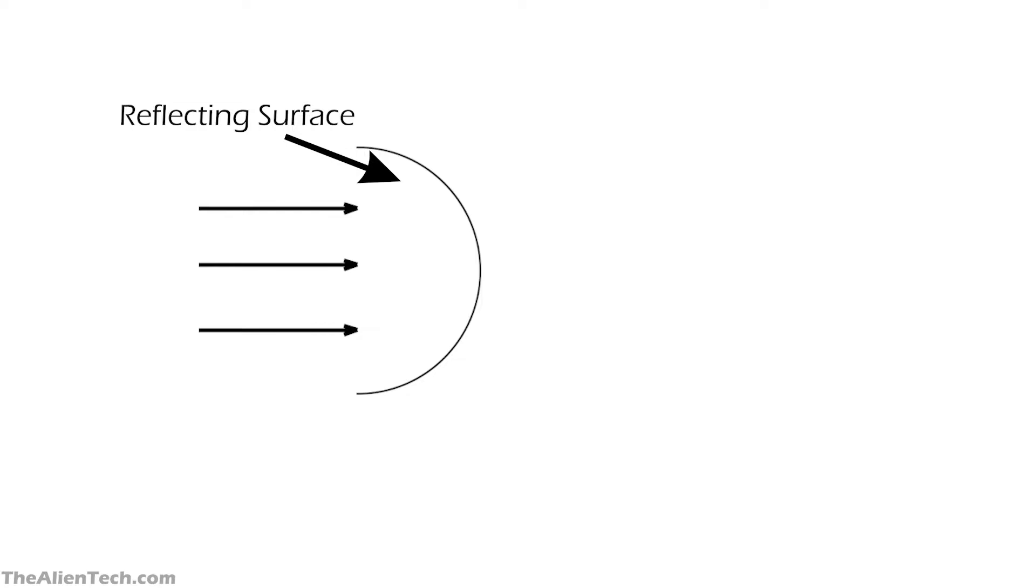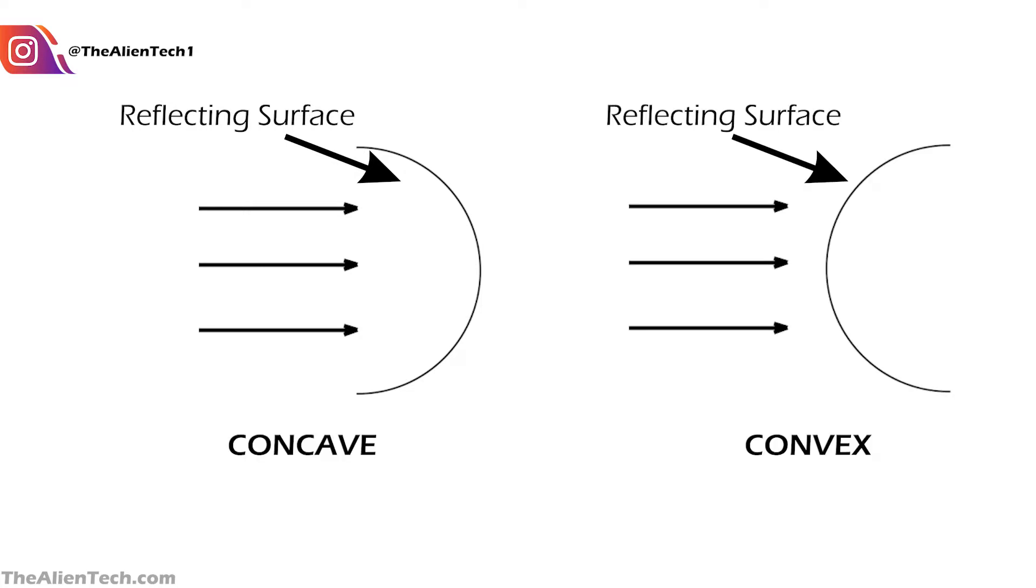Spherical mirrors have a spherical shape. They are easy to manufacture and they are cheaper. The two types of spherical mirrors are the concave mirror and the convex mirror. The concave mirrors are used inside a telescope.